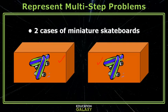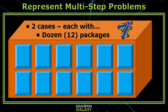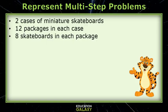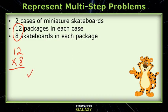We have two cases of miniature skateboards. Each case has a dozen packages — remember, a dozen is 12. Each package contains eight skateboards. Imagine opening all the packages and counting the skateboards. How could we get the total faster? Well, rather than saying eight plus eight plus eight plus eight, I could simply say I have 12 packages and multiply by the eight that are in each package. That would give me the total number of skateboards in one case. Then I would multiply that by two to get the total number that Mrs. Linton ordered.